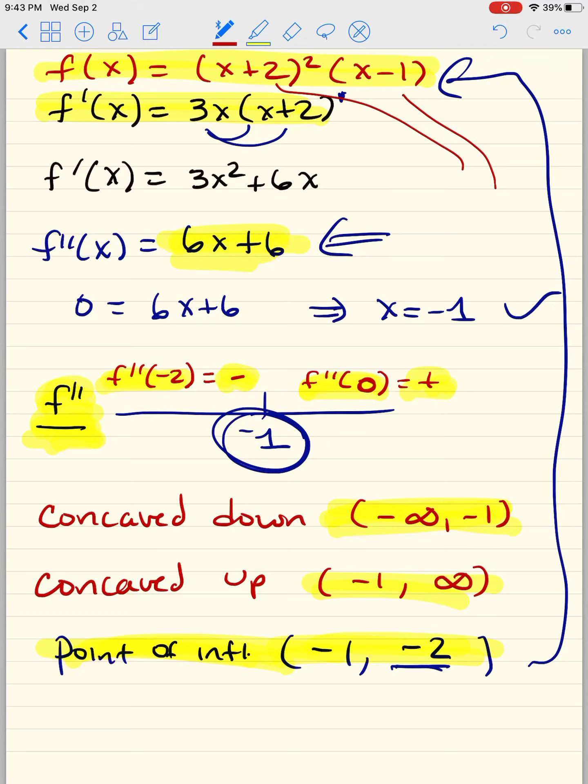And then you do increasing, decreasing, concave up, concave down. You draw the picture and then you can use your calculator to confirm the picture. But right now I wanted to talk to you about point of inflection, and that's the place where we switch from down to up, up to down. Now if it doesn't switch, that means there's no point of inflection, okay? So I hope this was helpful.